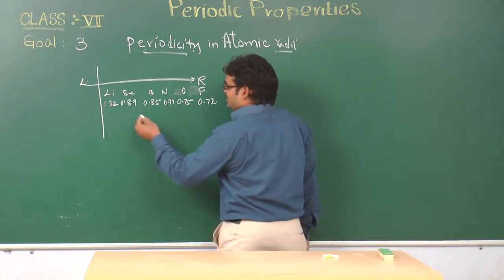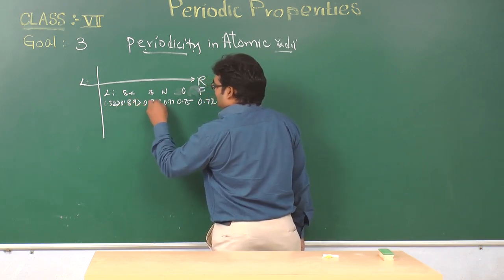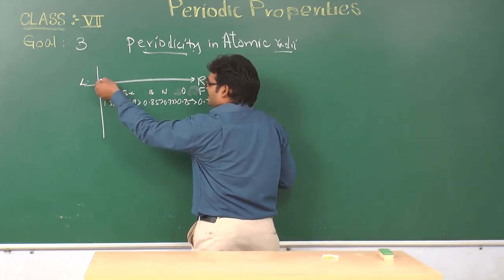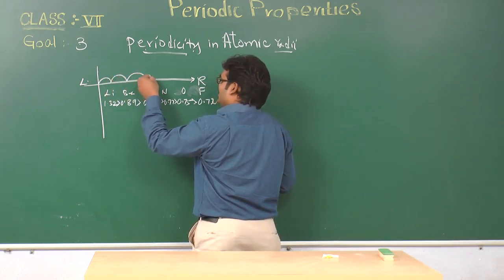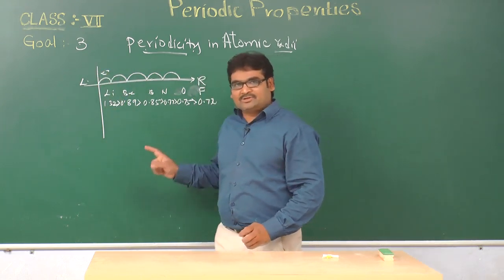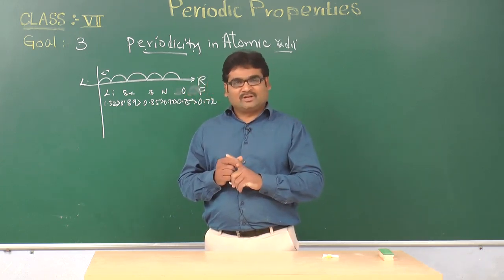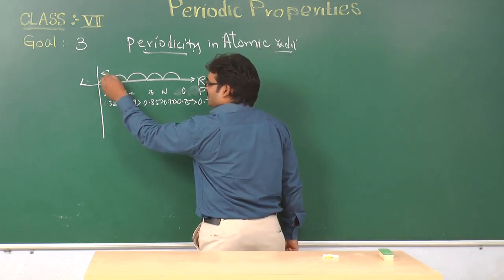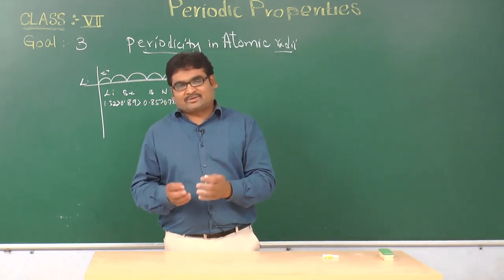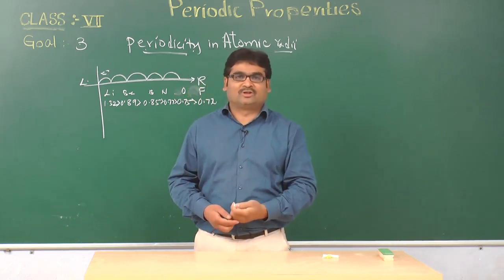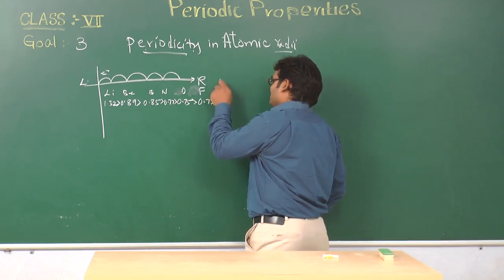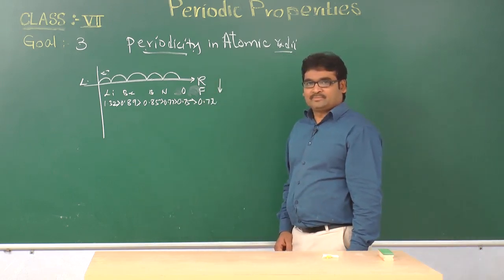Numerically, we see that as we keep on moving to the right side, the atomic size is decreasing, because the distinguishing electron is always added to the same shell. Of course, atomic number is increasing by 1, and the distinguishing electron is always added into the same orbital. Because of this, the extra nuclear charge pulls the valence electrons more towards it. As a result, the atomic size across a period decreases, and we can easily put a downward mark.